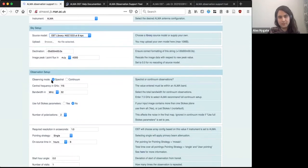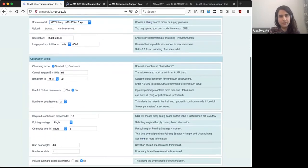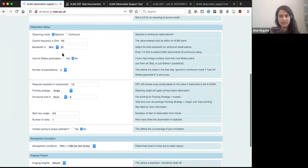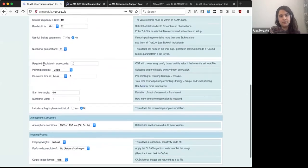then you need to select your observing mode. So here, for example, I want to observe a spectral line, but you could choose continuum, then you need to know the frequency of your line. And you can choose some appropriate bandwidth, decide whether you want Stokes parameters. The default here is no. And then you want to do something more fancy, then obviously you can change this. Then you want your required resolution in arc seconds. And then you can have a pointing strategy here. So single is obviously just one pointing. You can also select a mosaic if you have a large source and you want to cover it with many pointings. Or you can upload a user pointing file.